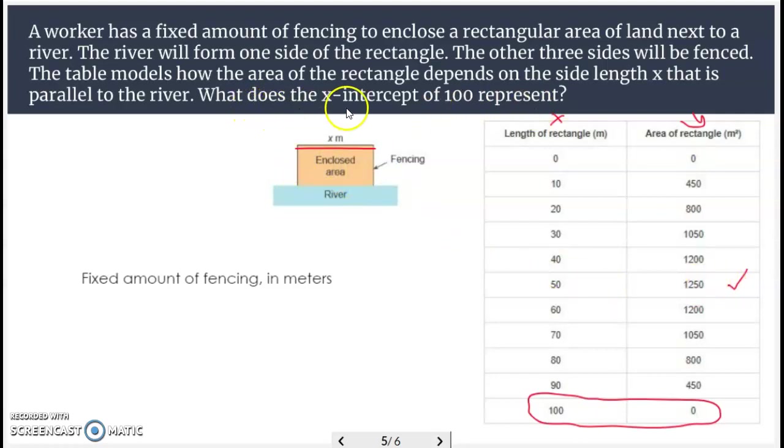But that's not what it's asking. What does the x-intercept represent? It's the fixed amount of fencing in meters, or the maximum amount that they have to use. All right. One more here.